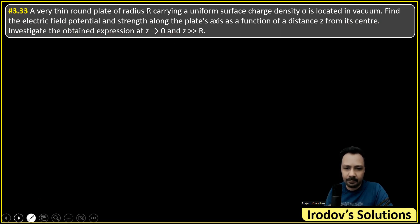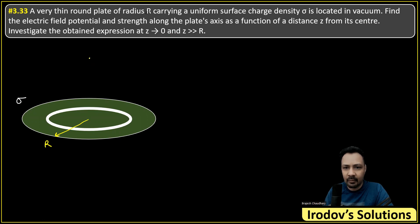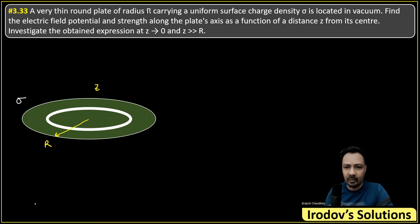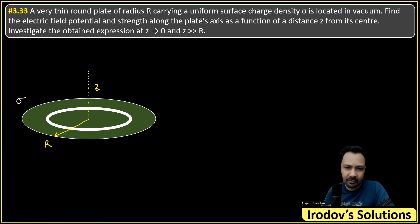We have a non-conducting disk of uniform surface charge density sigma and radius R. At an axial point at a distance z from the center, we need to find the electric potential and electric field. I will find the expression for the potential first, and then differentiate to get the electric field.